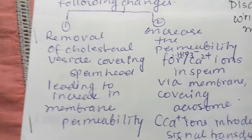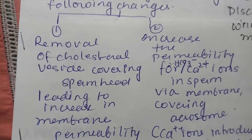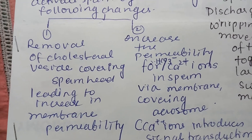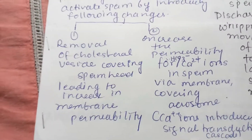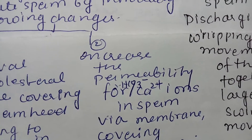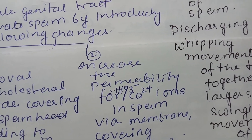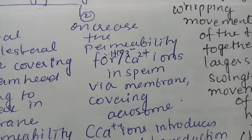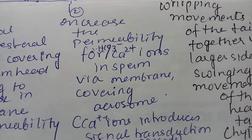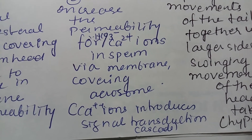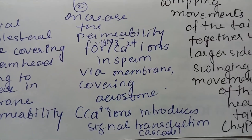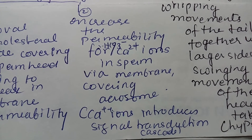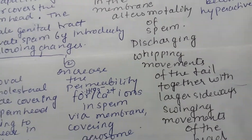These changes involve removal of the cholesterol vesicle covering the sperm head, which leads to an increase in membrane permeability. This cholesterol vesicle must be removed for the acrosome to become active. The female genital tract alters membrane permeability, making the sperm more permeable to bicarbonate and calcium ions. Influx of calcium ions introduces signal transduction — a number of biochemical events inside the sperm — representing the maturation of sperm in the female genital tract.